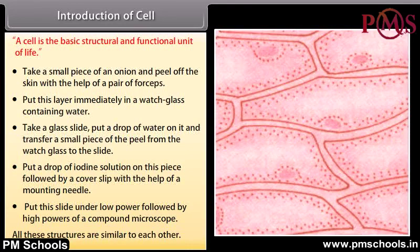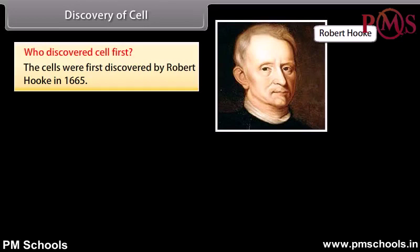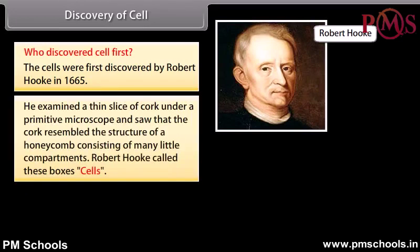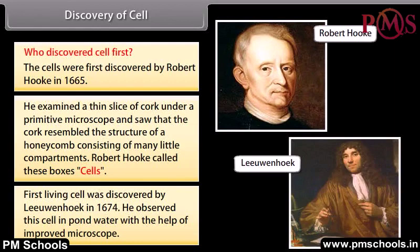Who discovered the cell first? Cells were first discovered by Robert Hooke in 1665. He examined a thin slice of cork under a primitive microscope and saw that it resembled the structure of a honeycomb consisting of many little compartments. Robert Hooke called these boxes 'cells'. The first living cell was discovered by Leeuwenhoek in 1674, who observed it in pond water using an improved microscope.